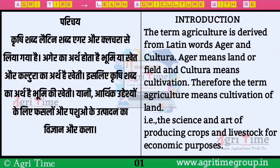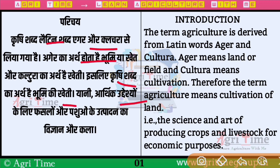ताकि Agriculture की आने वाली ऐसी videos की notifications आपको मिलते रहें। चलिए शुरू करते हैं — परिचय यानि कि Introduction। तो generally जो Agriculture है, या आप बोलें तो Krishi — यह Latin भाषा के शब्द 'Ager' और 'Cultura' से लिया गया है। 'Ager' का अर्थ होता है भूमि या खेत, और 'Cultura' का अर्थ होता है खेती यानि कि cultivation। इसलिए Krishi शब्द का अर्थ है भूमि की खेती। यह हो गया परिचय, Introduction।